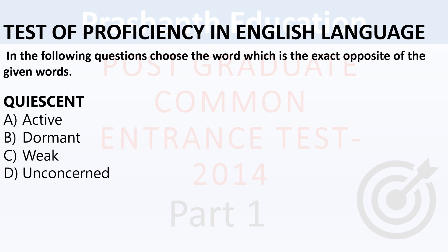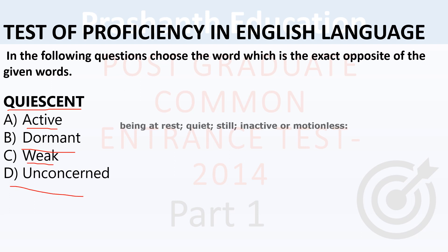Next section — antonyms. Choose the word exactly opposite to the given word. 'Quiescent' — options: active, dormant, weak, unconcerned. Quiescent means being at rest, quite still, inactive or motionless. So the opposite is 'active'.